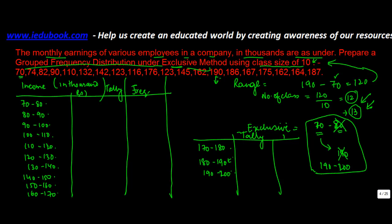Now we tally the data. Starting with 70 — it goes in the 70–80 class. 74 also goes there. 82 goes in 80–90. 90, because this is an exclusive method, will not go in 80–90 but in 90–100. 110 goes in the next class. 132 and 142 go in their respective classes. 150 lies in 150–160. 120 lies in 120–130, and 116 goes in 110–120.